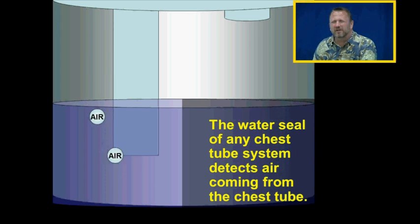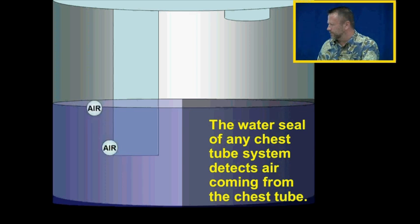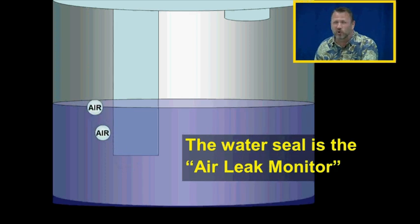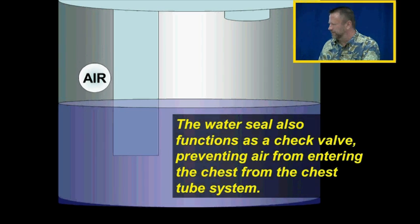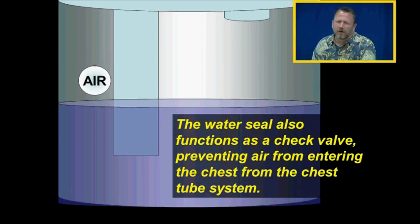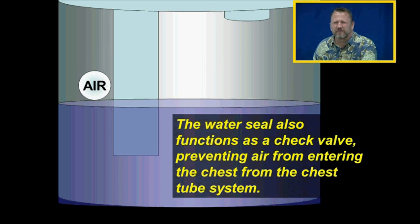The water seal of any chest tube system detects air coming from the chest tube. The water seal is also called the air leak monitor. The water seal also functioned as a check valve, preventing air from entering the chest from the chest tube system, hence the name water seal.